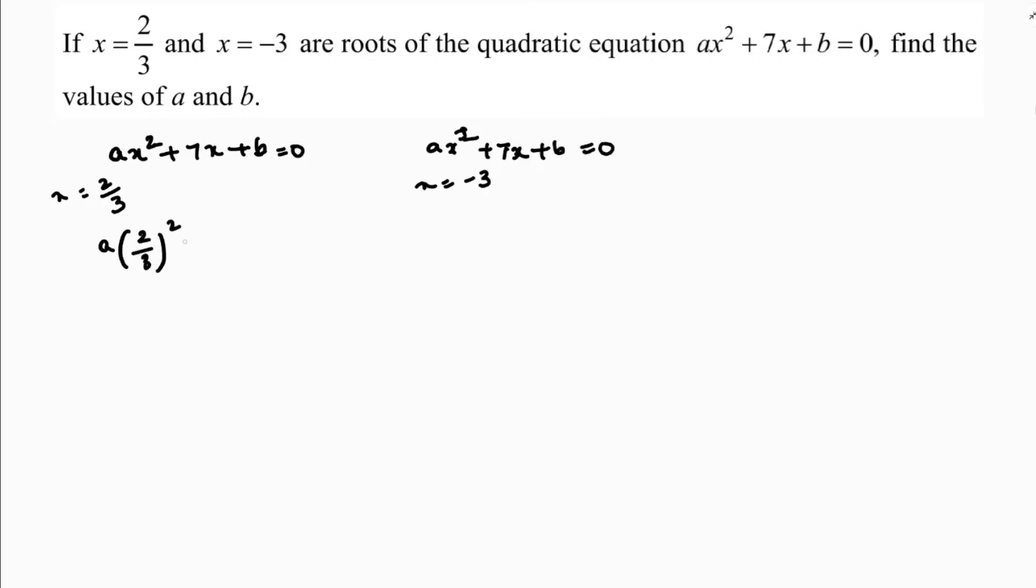If I substitute here in place of x, a times 2 by 3 whole square plus 7 into 2 by 3 plus b equals 0. So, a into 4 by 9 plus 7 times 2 is 14 by 3 plus b equals 0. And here, a into minus 3 whole square plus 7 into minus 3 plus b equals 0. So, minus 3 whole square is 9a minus 21 plus b equals 0.